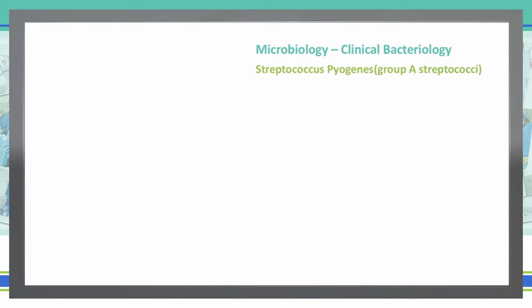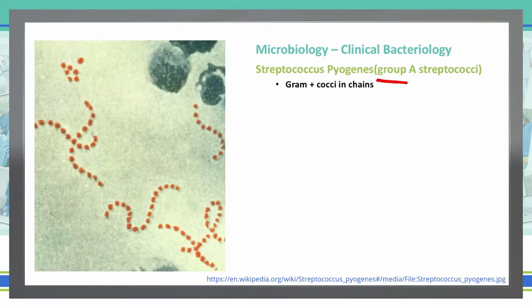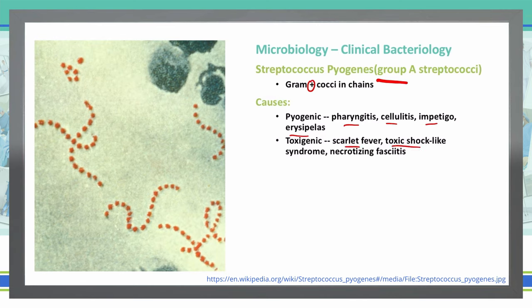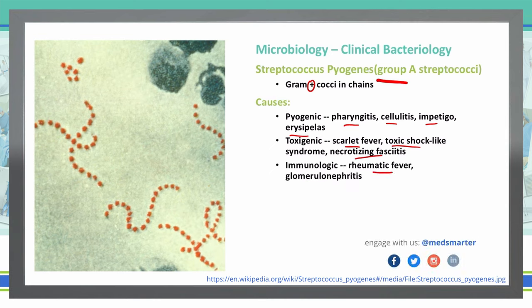Streptococcus pyogenes, also known as Group A strep, is a gram-positive cocci that forms in chains — attached end to end in a line or rope-type structure. It is pyogenic, meaning it can cause pharyngitis, cellulitis, impetigo, and erysipelas. In its toxigenic state it can cause scarlet fever, toxic shock-like syndrome, and necrotizing fasciitis. In its immunologic state it can cause rheumatic fever and glomerulonephritis.